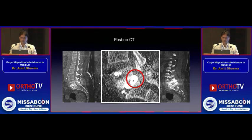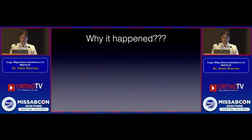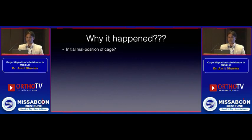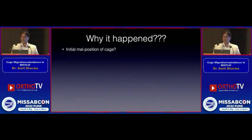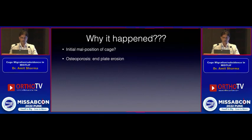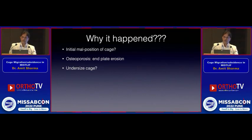After discussion with the patient and colleagues, the patient was taken back for revision surgery. Why did it happen? In this case, there was initial malposition of the cage and a break in the endplate, which prevented the cage from being properly compressed against the L5-S1 endplates.